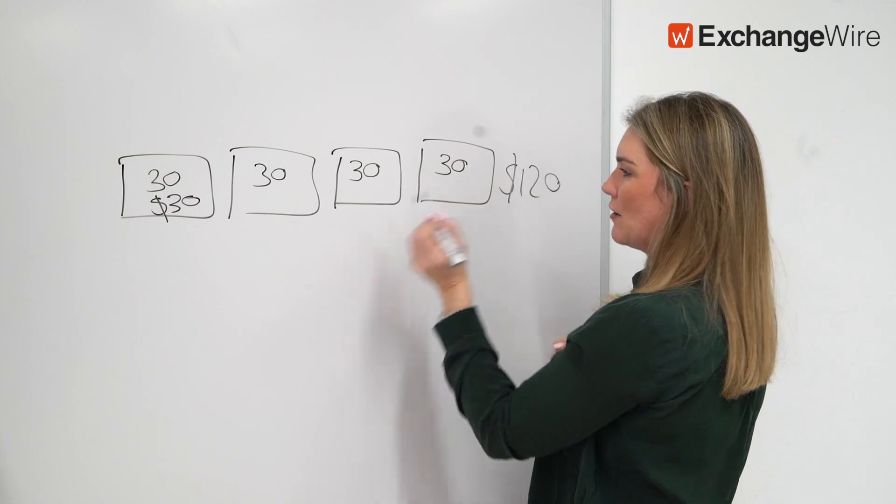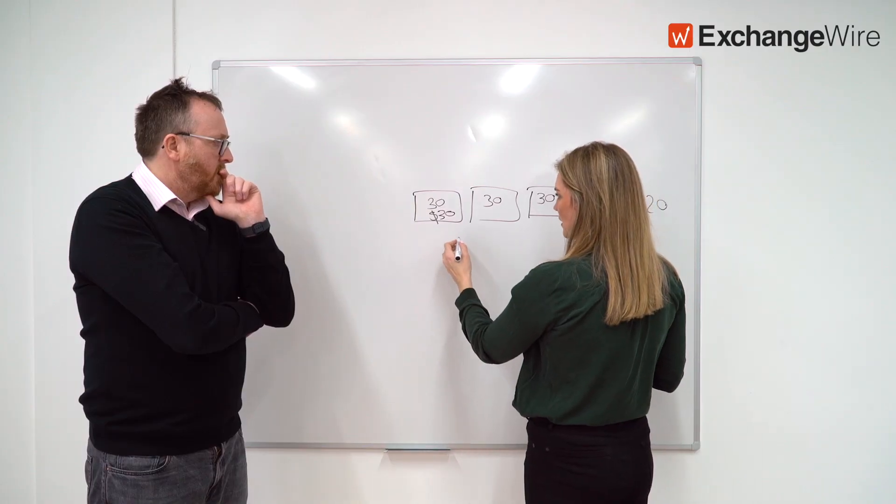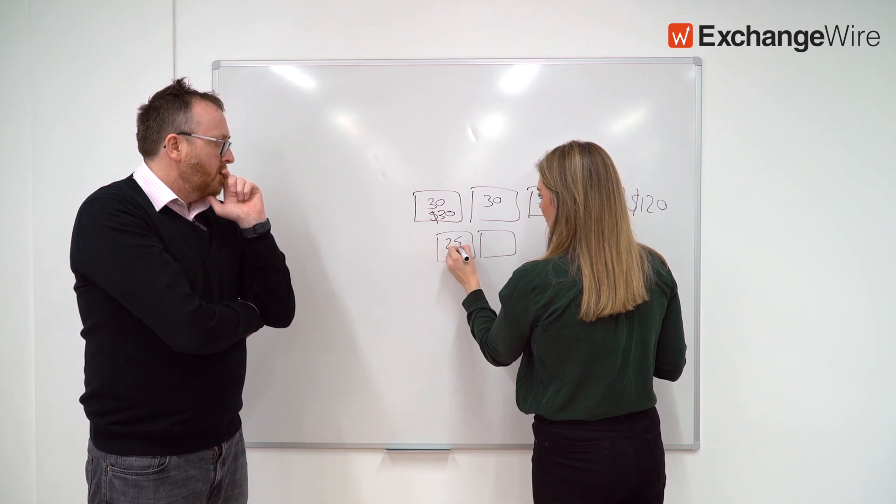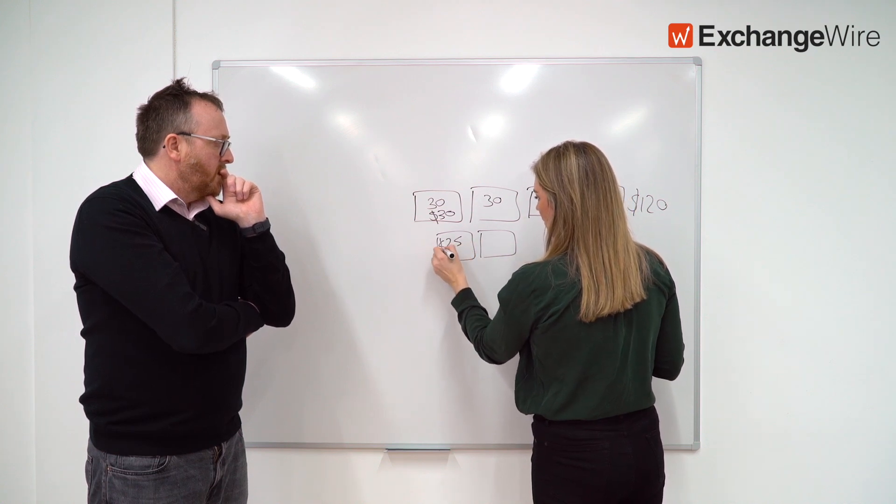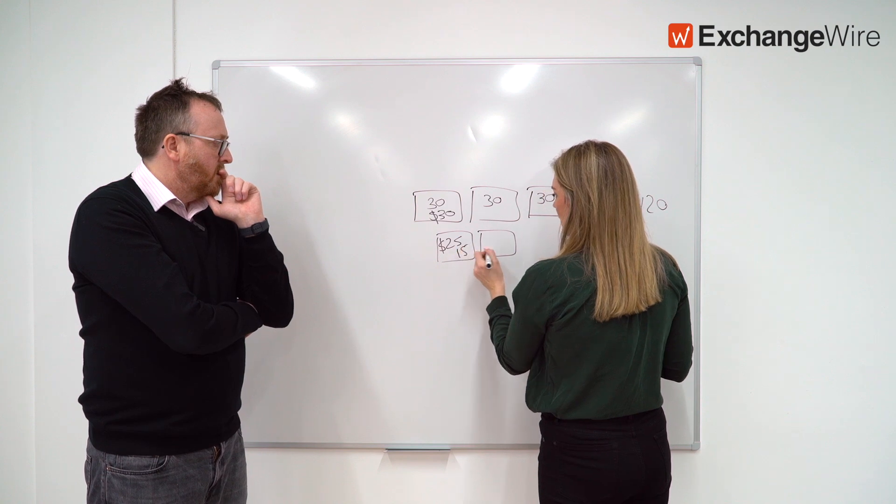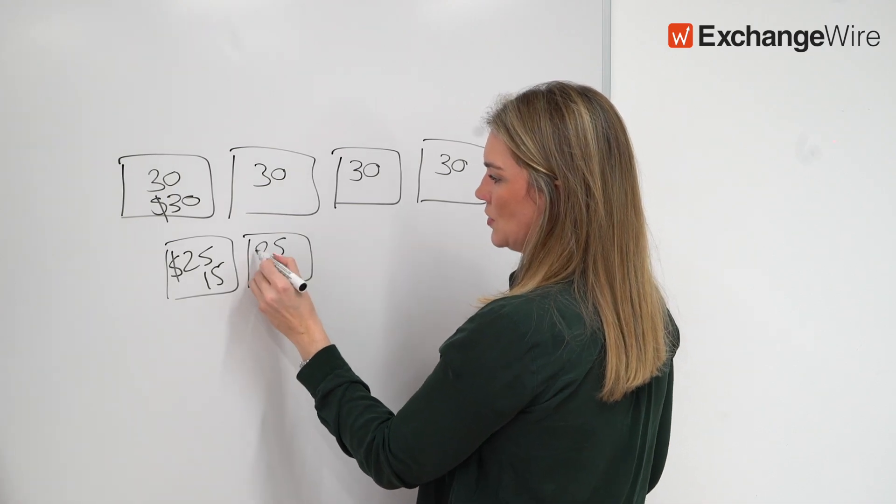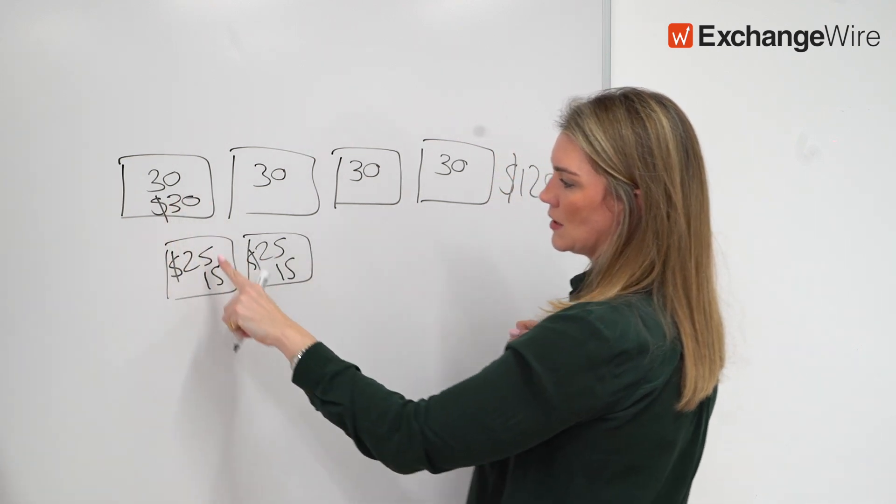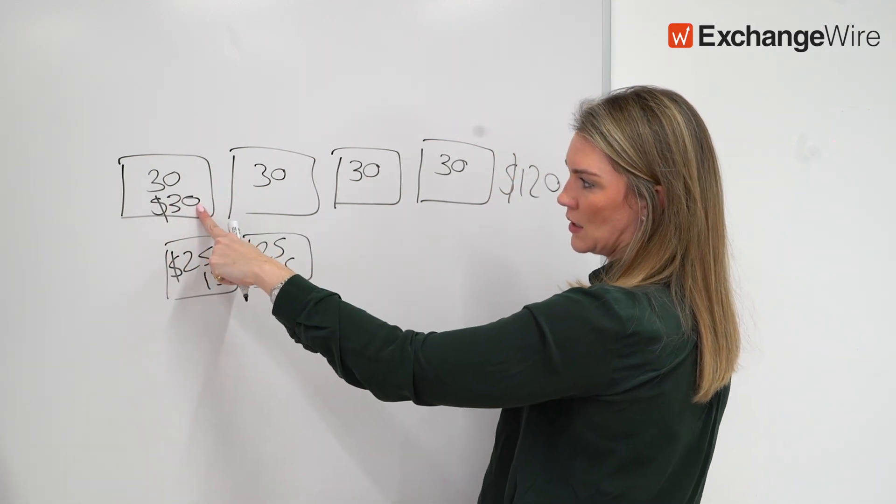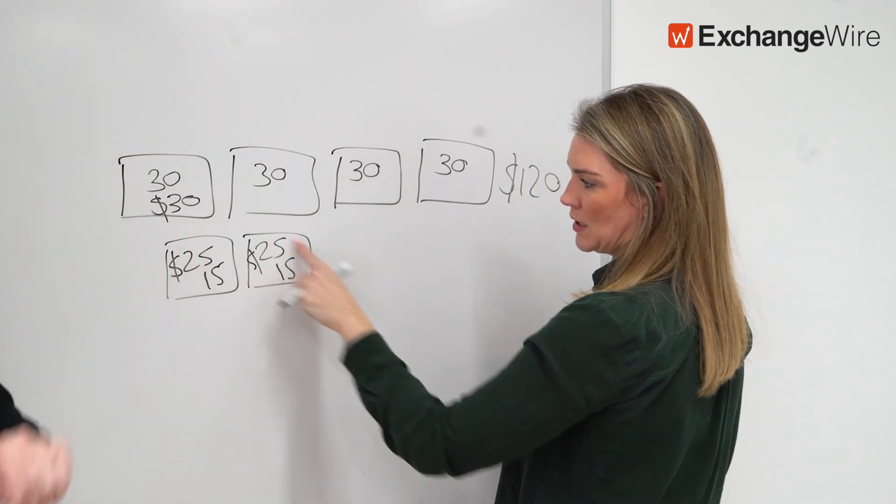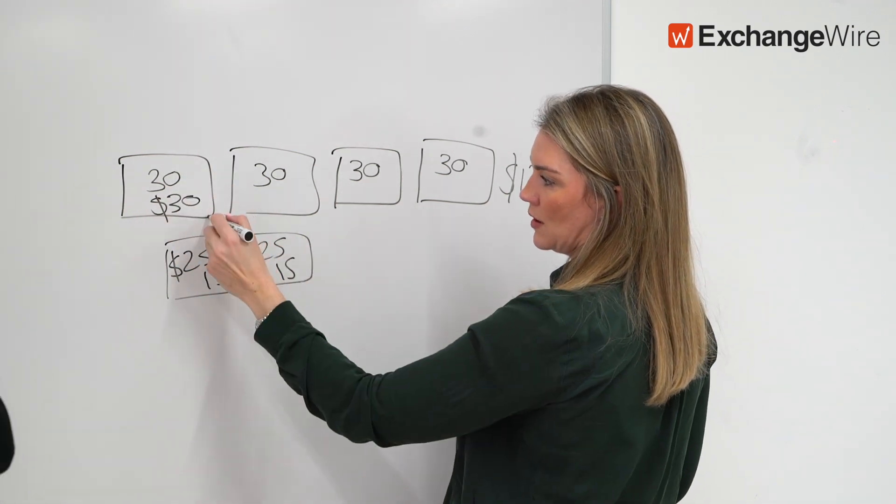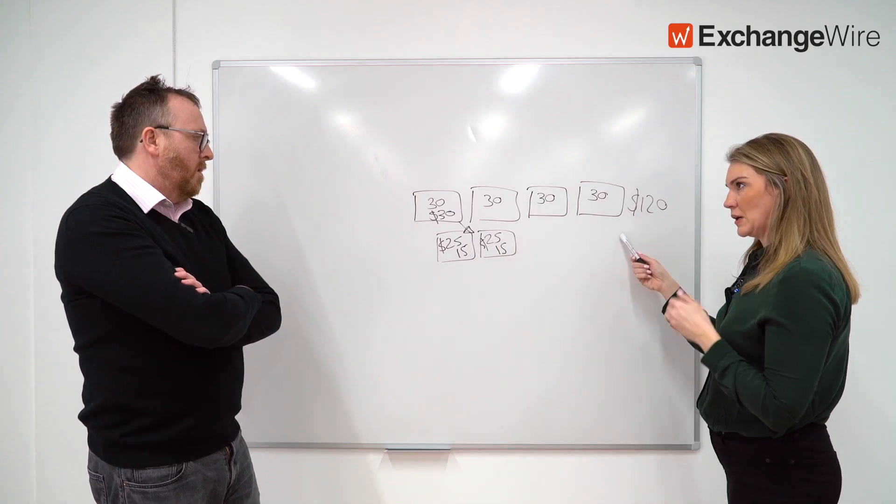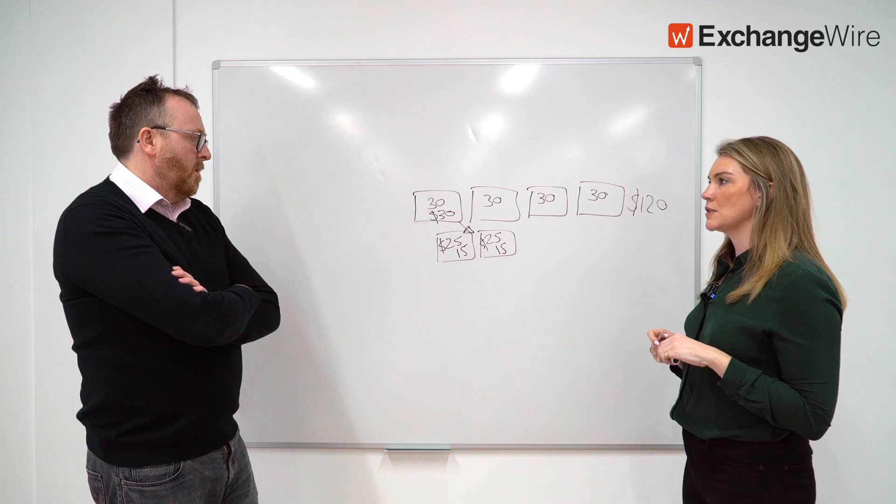Now what you can do is separate it. So somebody might bid thirty dollars for 30 seconds, in which case you get 120 dollars for the end of this. Whereas somebody else might have bid 25 dollars for 15 seconds, so then you'd have two 25 dollar bids for 15 seconds for 30. Instead of getting 30 dollars here, you'd end up getting 50 just for that same time.